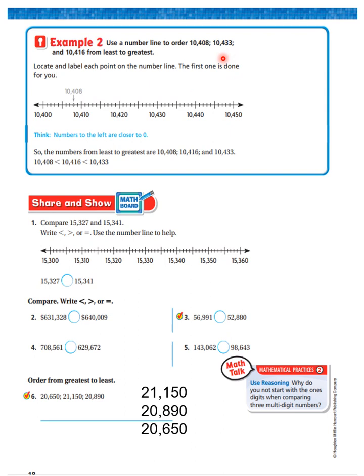Let's go to the next one, 10,433. Let's find where 10,433 would be. I see 10,430 here. So, 31, 32, 33. 10,433 would be right here. I'm going to make a little dot. So it's going to be 10,433.